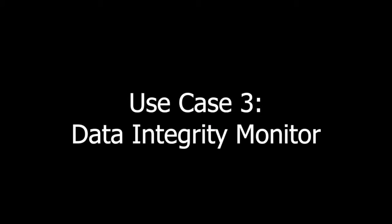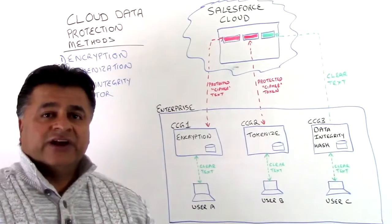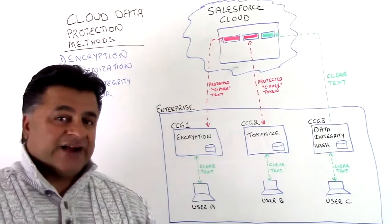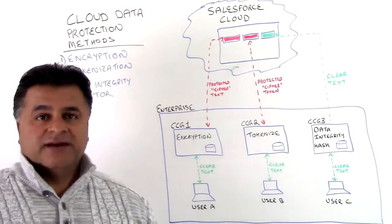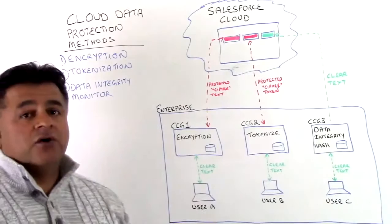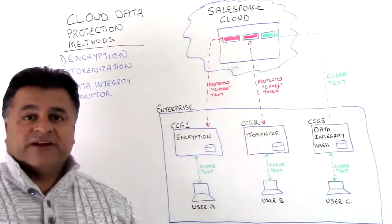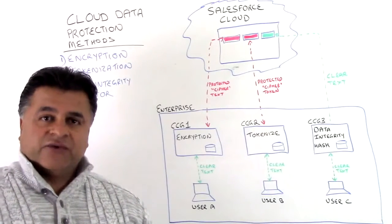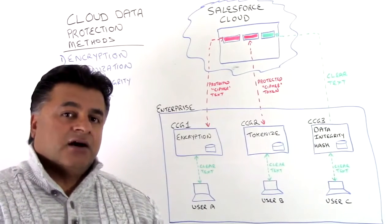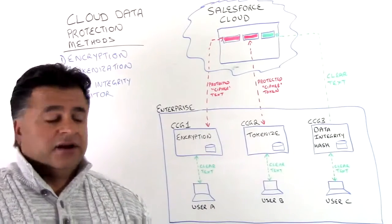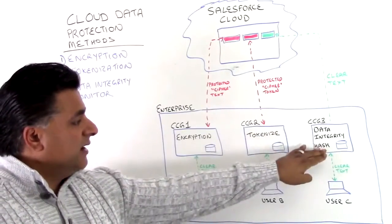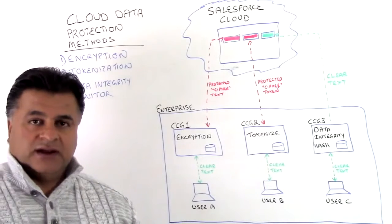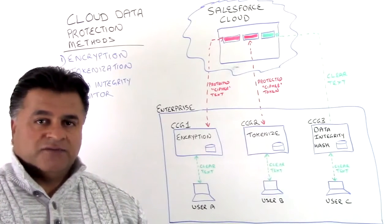The third method is the data integrity monitor, where we use a hash. The use case is for global enterprises that want to keep an accounting or record of who modified the actual data, rather than protecting the data itself. If a value changes from one to two, they just want to know who modified it. For global manufacturers with employees from Europe, North America, and Asia changing records in real time, they want to keep an accounting of who modified a record and whether they were authorized to. The data goes in clear, but there is a value in our table recording who modified it. This use case is ideal for those in automotive or pharmaceutical manufacturing businesses.